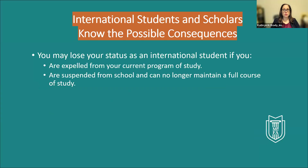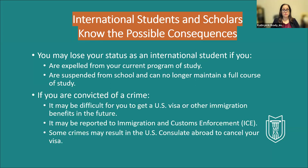As an international scholar or student, what you need to understand is your risks are higher than the average person on campus. If you are expelled or suspended from school and can no longer maintain your course of study, that is going to affect your ability to have F-1 student status, and it's possible that that could be terminated. If you're convicted of a crime, it may also be difficult for you to get a visa or other immigration benefits in the future. That could be reported to ICE, and sometimes that could be reported to the U.S. Consulate Abroad.